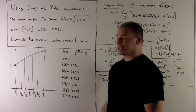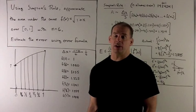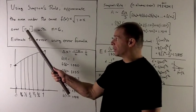I have n equal 6. For Simpson's rule, n must always be even so that our pattern works. Then we have the interval 0, 1.